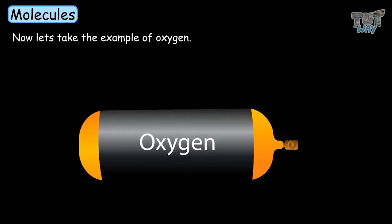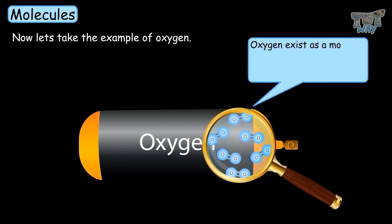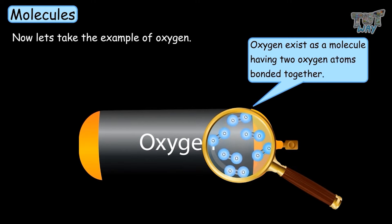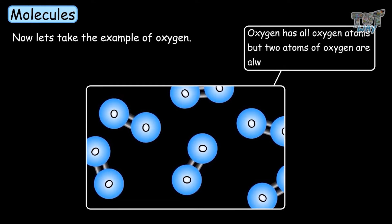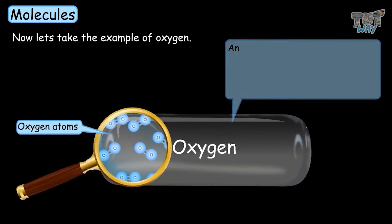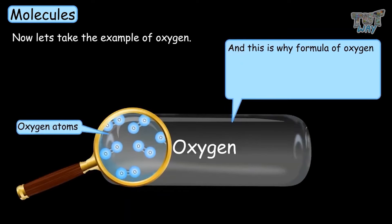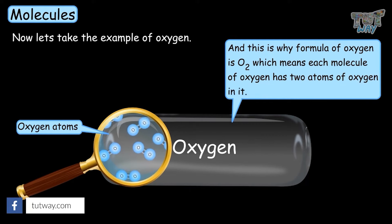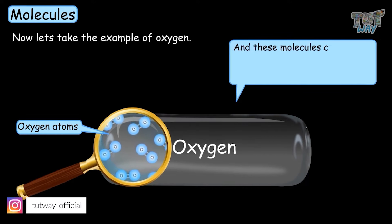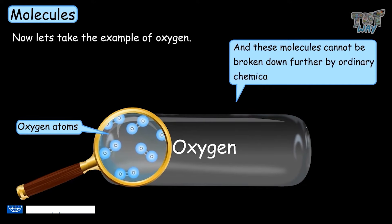Now let's learn what molecules are. Let's take the example of oxygen. We learned that oxygen only has oxygen atoms. In the case of oxygen, it exists as a molecule that has two oxygen atoms bonded together. This is why the formula of oxygen is O2, which means each molecule of oxygen has two atoms of oxygen in it. And these molecules cannot be further broken down by ordinary chemical means.